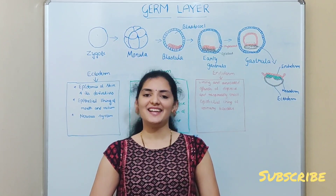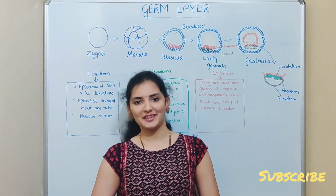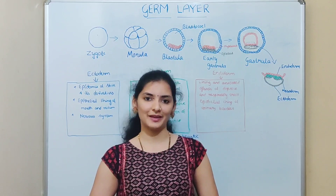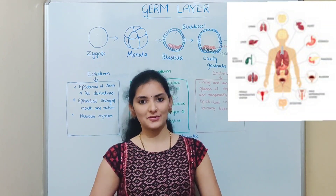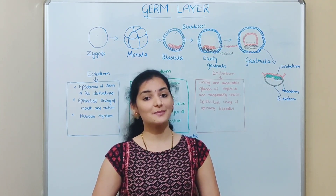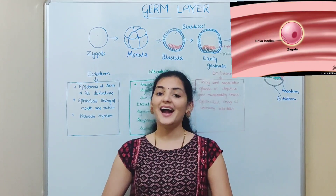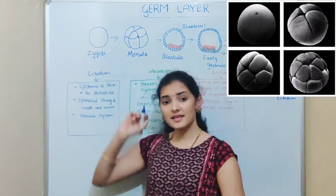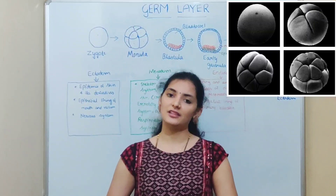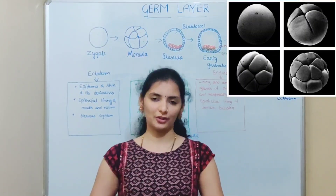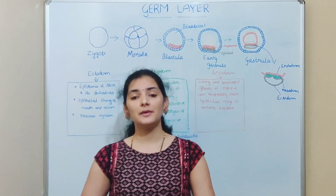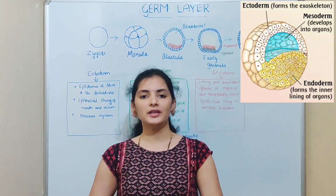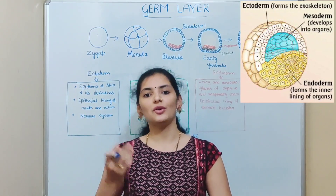Welcome back to my channel. In this video I'm going to talk about the concept of germ layers. The majority of organisms on earth are multicellular, including human beings. The body of a human being is made up of trillions of cells, but this huge body is basically formed from a single cell called the zygote. During early embryonic development, the germ layer is formed — a layer of cells which produces tissues and organs in the adult body.